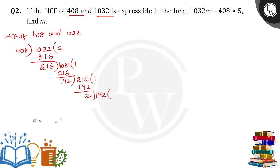24 into 192, how many times? 192 divided by 24, 8 times directly. 0 is the remainder. What is the HCF? 24.